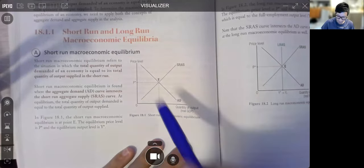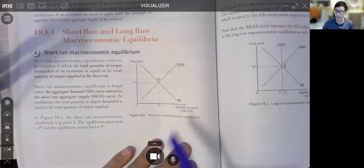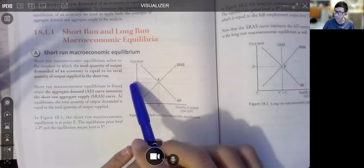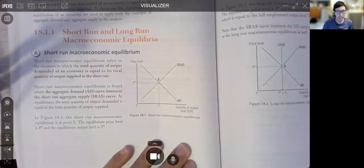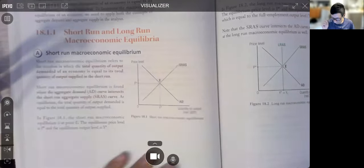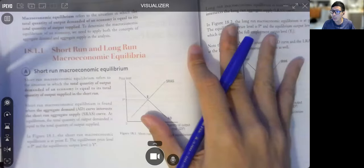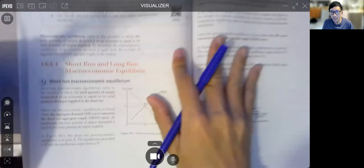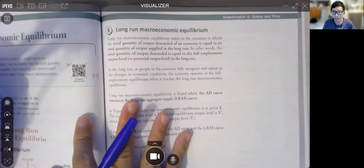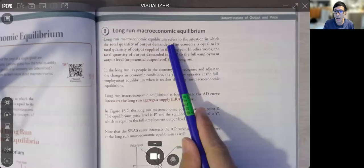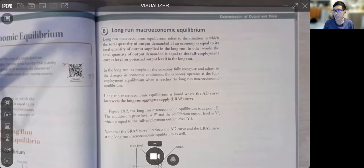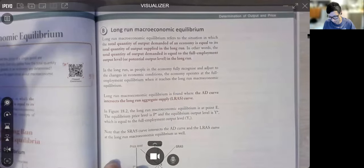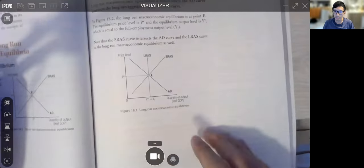In short run, we have our AD and our SRAS, the intersection, we got an Equilibrium price level, and then Equilibrium output level. Very easy. But then, if you look at page 109 of your textbook, this time ADAS is the most difficult place. We have another Equilibrium, we call long run macroeconomics Equilibrium.